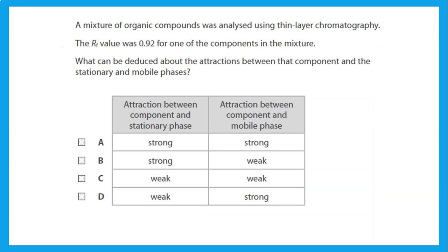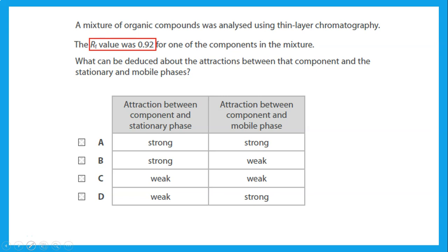If a component has an RF value of 0.92 in thin layer chromatography, that means it traveled very high, indicating weak attraction to the stationary phase but strong attraction to the mobile phase — and that is why it traveled up with the solvent.